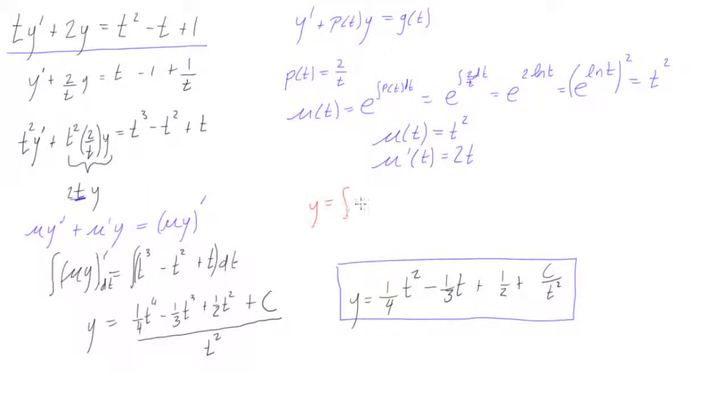we said the solution has the general form, the general solution has the form of this, because y is equal to the integral of μ(t) times g(t), like this, times g(t), dt,